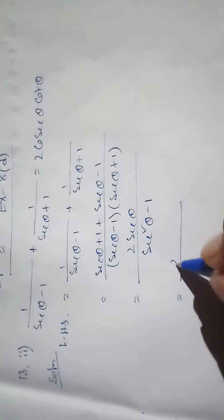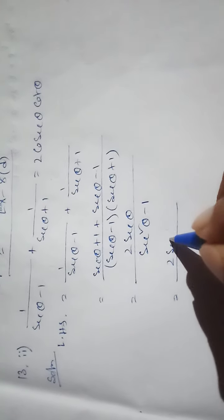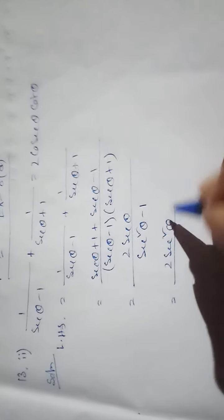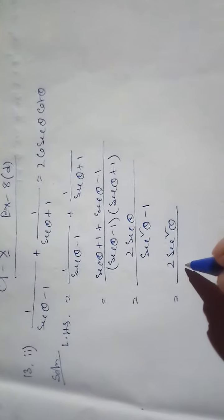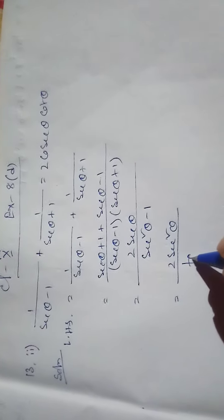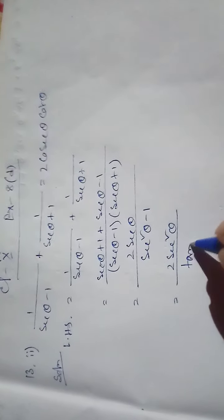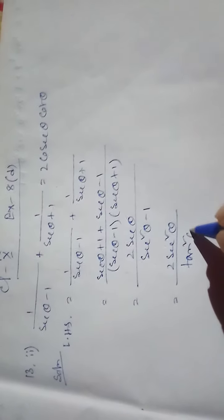So we have 2secθ / (sec²θ - 1). Now, sec²θ - 1 equals tan²θ.